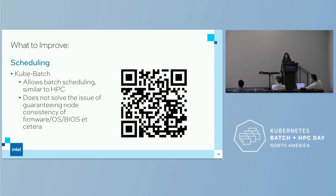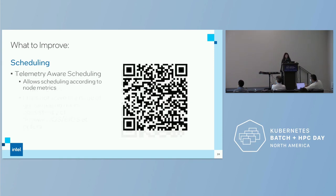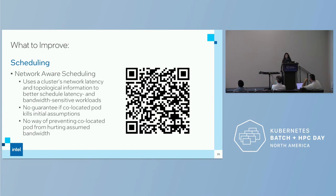Kubebatch does not solve the issue of guaranteeing node consistency of firmware, OS, BIOS, etc. You're still going to get performance issues like disparate Ethernet drivers. Intel has a project called Telemetry Aware Scheduling which allows scheduling according to node metrics. But the metrics are currently node-only, which we're trying to fix, and it's still internal to Intel — we need to upstream it. There's also network-aware scheduling from IBM Labs, which uses a cluster's network latency and topological information for latency and bandwidth-sensitive workloads. However, there's no guarantee if co-located pods kill initial assumptions.